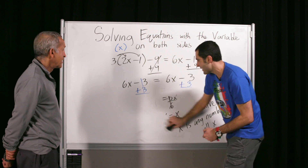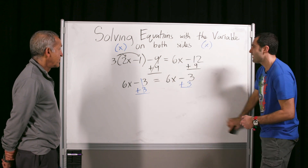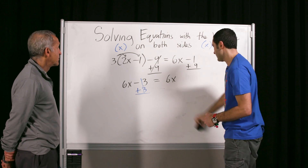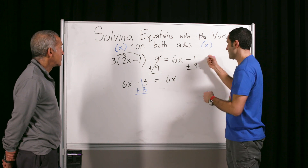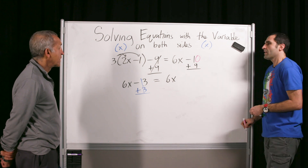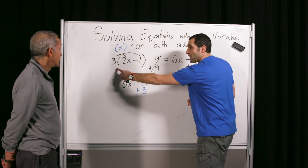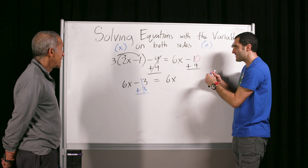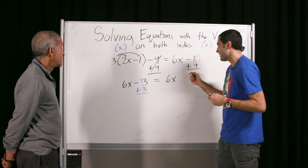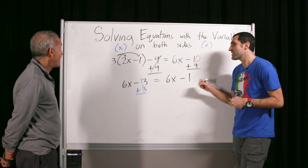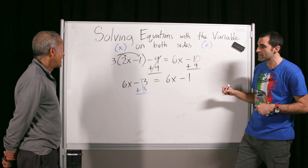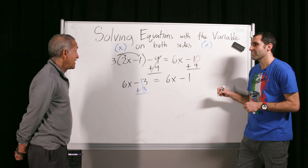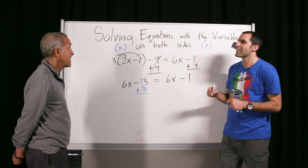Check this out — what if I changed it to minus 10? Distributing the three gives six x minus three. Added nine to both sides. Six x comes down. What is negative 10 plus nine? Minus one. So we have six x equals six x minus one. Does this strike you as interesting? That's an impossible equation. There is no answer.